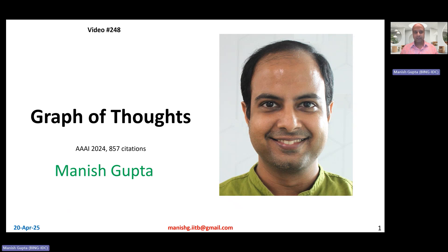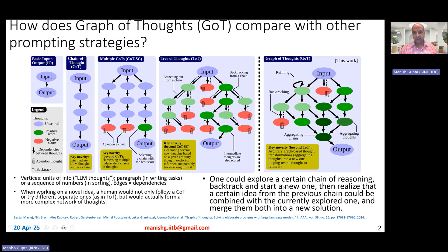Hi, my name is Manish Gupta and in this video I'm going to talk about this interesting paper called Graph of Thoughts. This paper appeared in AAAI 2024 and has 857 citations as of now. Let's get started — what is Graph of Thoughts and how does it compare with other prompting strategies? Prompt engineering has become very popular and there are so many prompting strategies, for example vanilla input-output, chain of thought, multiple chains of thought with self-consistency, tree of thoughts, and of course graph of thoughts.